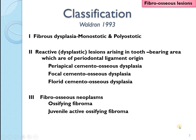Waldron in 1993 classified fibro-osseous lesions into three categories. The first is fibrous dysplasia, which can involve a single bone (monoostotic) or multiple bones (polyostotic). The second is a reactive lesion arising in a tooth-bearing surface of periodontal ligament origin, divided into three cemento-osseous dysplasias: periapical, focal, and florid cemento-osseous dysplasia. The third is the neoplastic component — ossifying fibroma — and its aggressive variant, juvenile active ossifying fibroma.